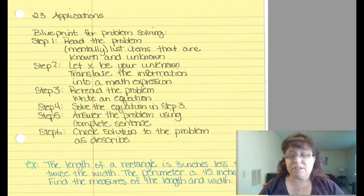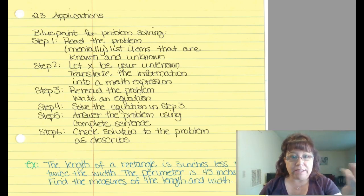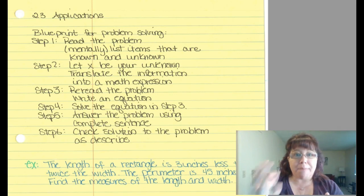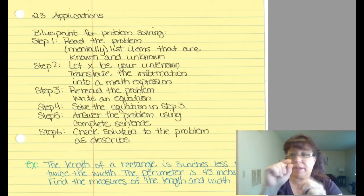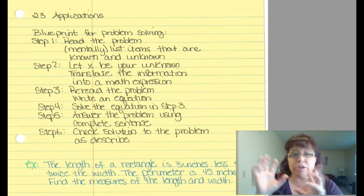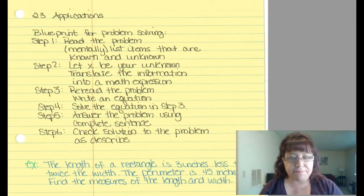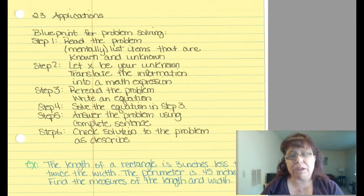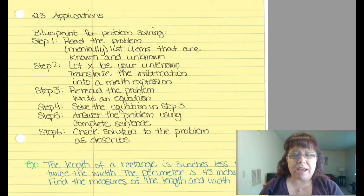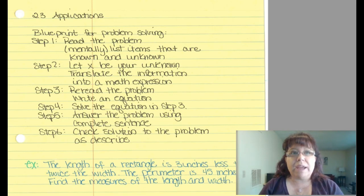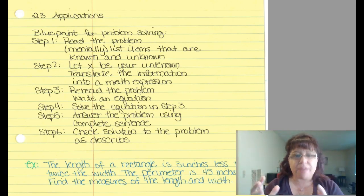The second step is to let X or any variable be your unknown and translate the written information into math — that could just be pulling out the information, getting it in line with what you need for math. The third step is to re-read your problem. Notoriously, we will overlook something when we read it the first time, so there could be some information we overlooked. Make sure you have all the information given, then write your equation that fits the problem.